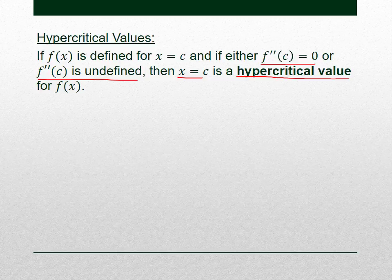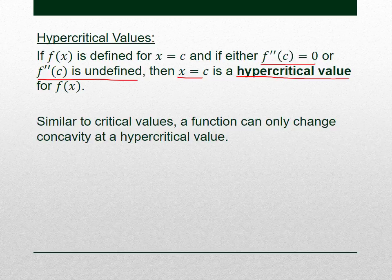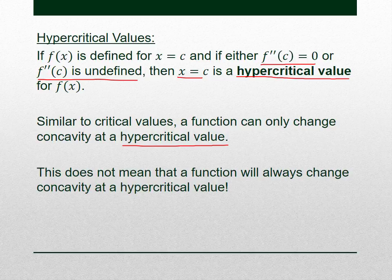To find hypercritical values, find the second derivative and see where it's zero or undefined. A function can only change concavity at a hypercritical value — it can only go from concave up to concave down, or concave down to concave up, when passing through one of these hypercritical values. But just like before, that doesn't mean it has to change at a hypercritical value. These are just the only places where a change in concavity can occur.